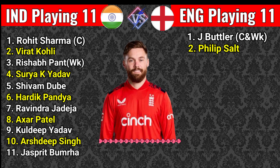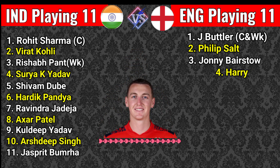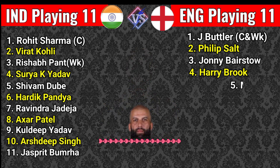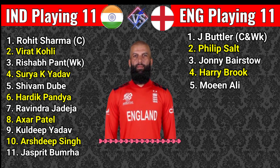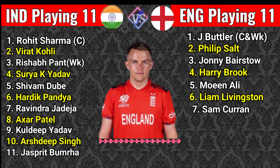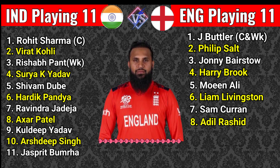Number two: Philip Salt, right-handed batsman. Number three: Jonny Bairstow, right-handed batsman. Number four: Harry Brook, left-handed batsman. Number five: Moeen Ali, batting all-rounder. Number six: Liam Livingstone, batting all-rounder. Number seven: Sam Curran, bowling all-rounder.